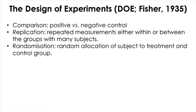For a study to be an experiment, there are several design components required to ensure validity and reliability. Among those components, we will talk about three of them: a need for a comparison group, replication, and random allocation. To illustrate why those components are needed, let's take a hypothetical study where you want to test the efficacy of a drug to cure or treat a disease.